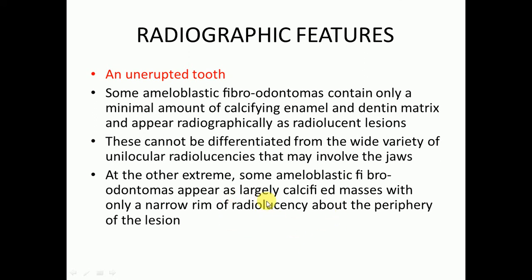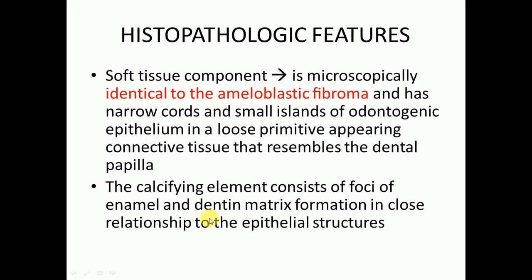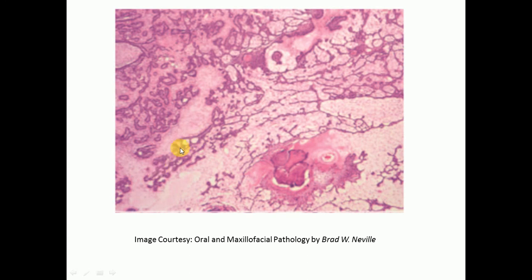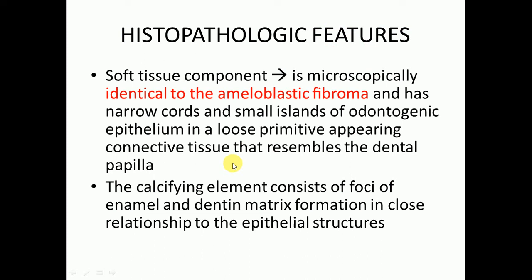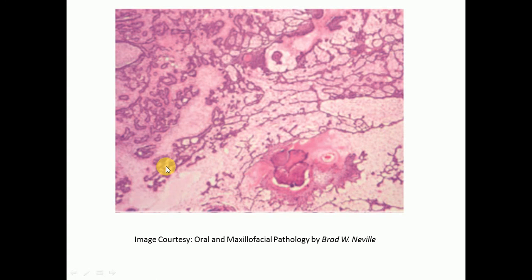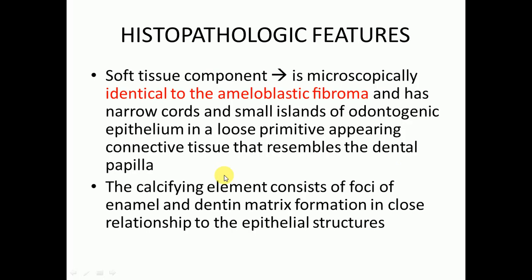Now histopathological features: the soft tissue component is microscopically identical to ameloblastic fibroma — narrow cords and small islands of odontogenic epithelium in a loose primitive-appearing connective tissue resembling the dental papilla. There will be anastomosing epithelium and connective tissue with tooth-like calcified material. The cords are two cells thick, consisting of columnar to cuboidal cells.